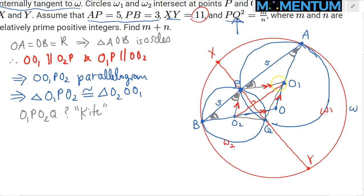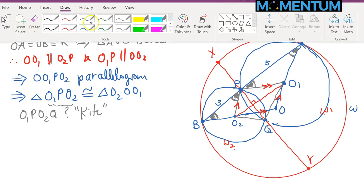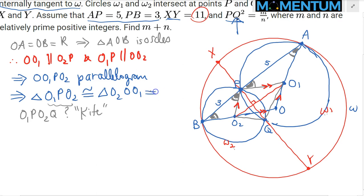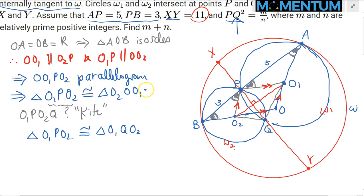Because it's a kite, O1O2 is a symmetry axis. As a result, triangle O1PO2 is congruent to triangle O1QO2. But because congruence is transitive, those two triangles — O2QO1 and O1O2O — are now congruent to each other. That's the big moment.